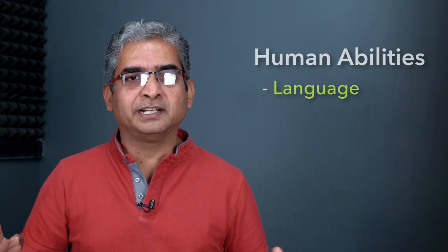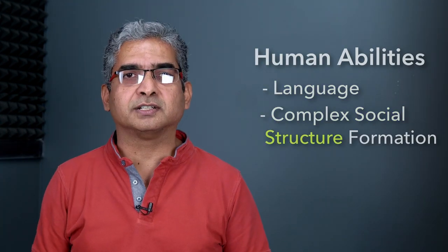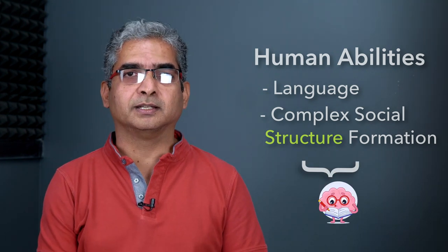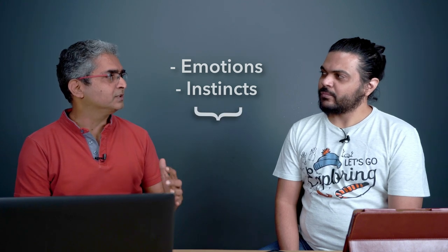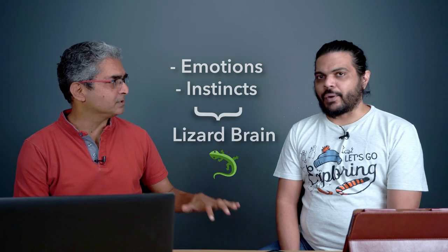In the literature, this is typically referred to as system one, which is the lizard brain and system two, which came later, which is the human brain. So you would have heard terms like prefrontal cortex and so on. I have heard them, but they don't make any sense to me.